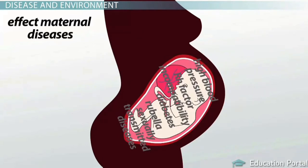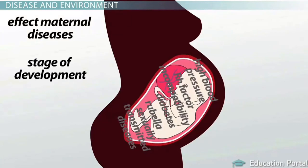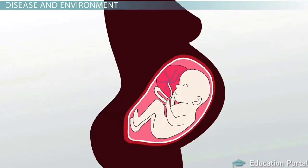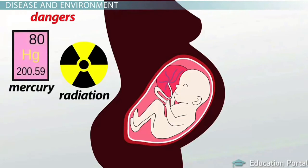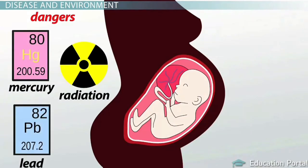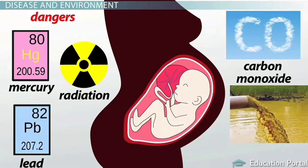What effect maternal diseases could have depends on the stage of prenatal development in which they occur and how long the condition lasts. An embryo or fetus can also be endangered by other hazards in the environment. Radiation, mercury, lead, carbon monoxide, or pollutants such as toxic waste can endanger prenatal development.